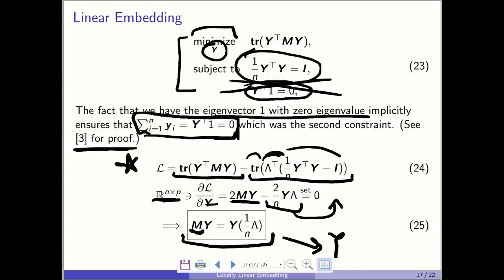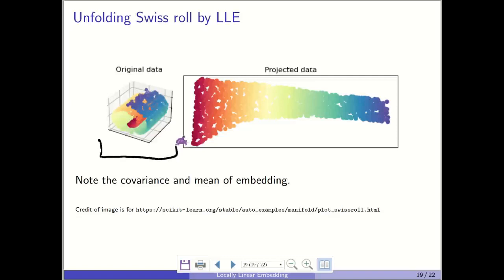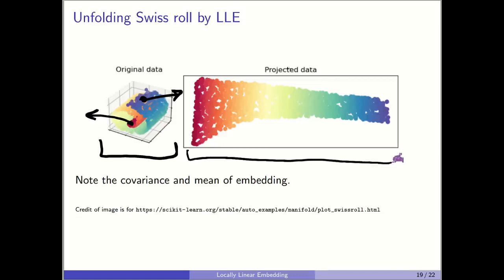Let's see some examples. Here we have a Swiss roll — a completely nonlinear manifold. LLE correctly unfolds it: similar to unrolling it by hand, stretching both sides to get a flat plane. It works because the k-nearest-neighbor graph respects neighbors on the manifold, not straight-line Euclidean distances. That's why LLE is a nonlinear method — it preserves manifold structure that PCA would ruin.